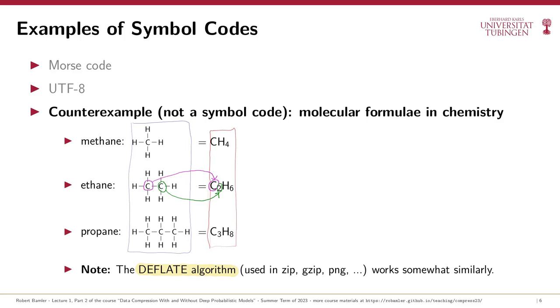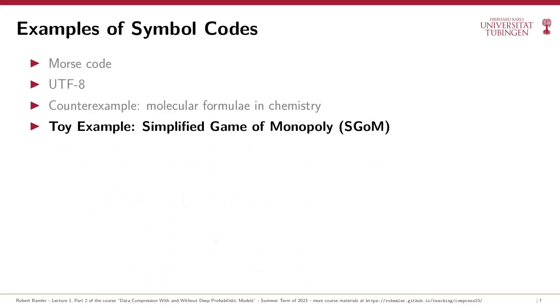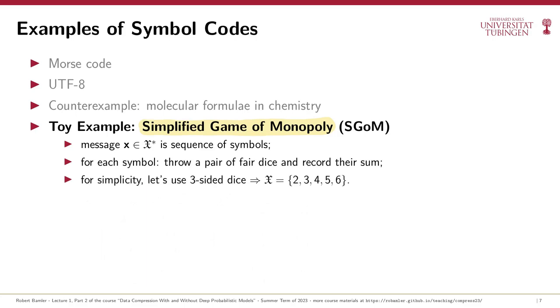To keep the following discussion simple, we're now going to introduce a much smaller toy example that I'll call the simplified game of Monopoly. We consider messages that are sequences of symbols from a finite alphabet, and we assume that the data source generates each symbol by throwing a pair of fair dice and recording their sum, like in a game of Monopoly. In the real game of Monopoly, one can throw 11 different numbers from 2 to 12, and writing out huge tables for all these possibilities gets old very soon. So to keep things simpler, we'll instead assume that the dice are only three-sided, so that our alphabet X only contains the integers from 2 to 6.